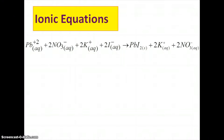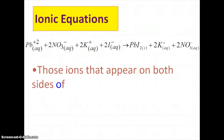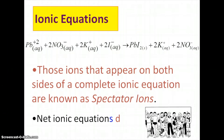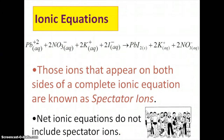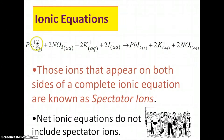Molecular equations we're not going to worry about because you already know how to do those — those are the regular equations we've been doing. Ionic equations are when you basically break it into its component ions. So you had lead nitrate (2), and we broke that back apart into lead 2+ and two nitrates minus.